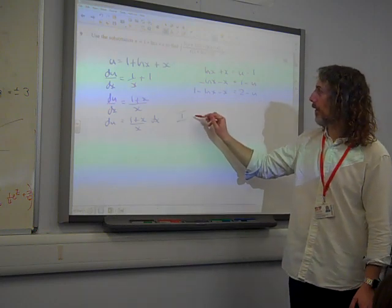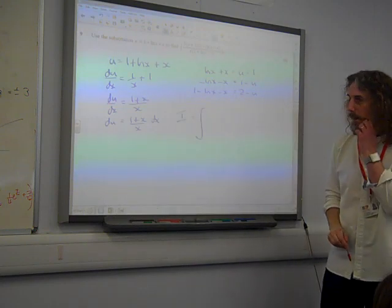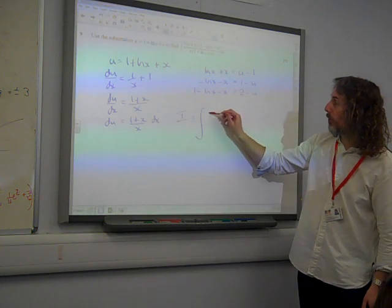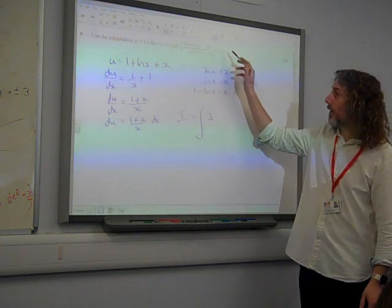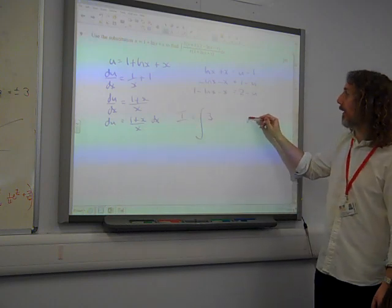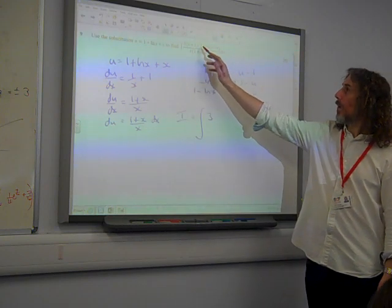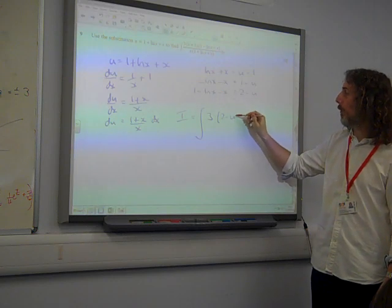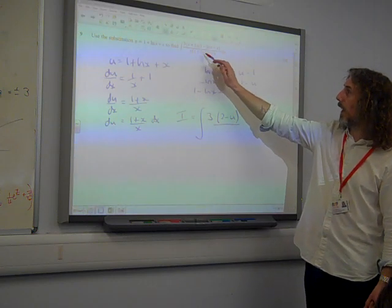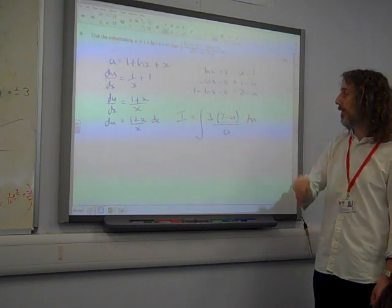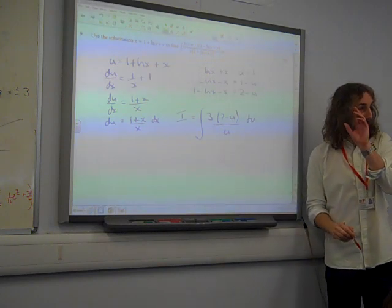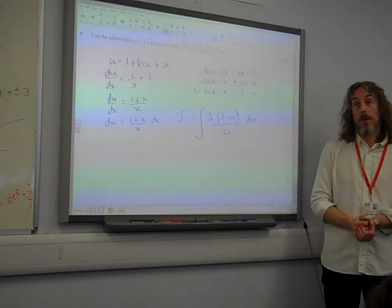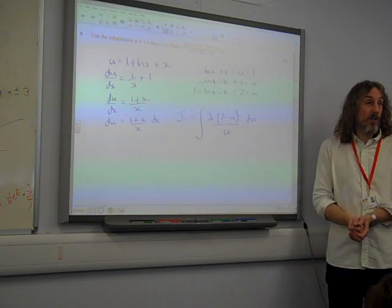So the integral that I started with is now... So can we see what's happened with this? We've got the 3, x plus 1 over x dx is equal to du. 1 minus ln(x) minus x is equal to 2 minus u. And 1 plus ln(x) plus x is equal to u. So having done the substitution, my integral looks like that, which is much nicer.